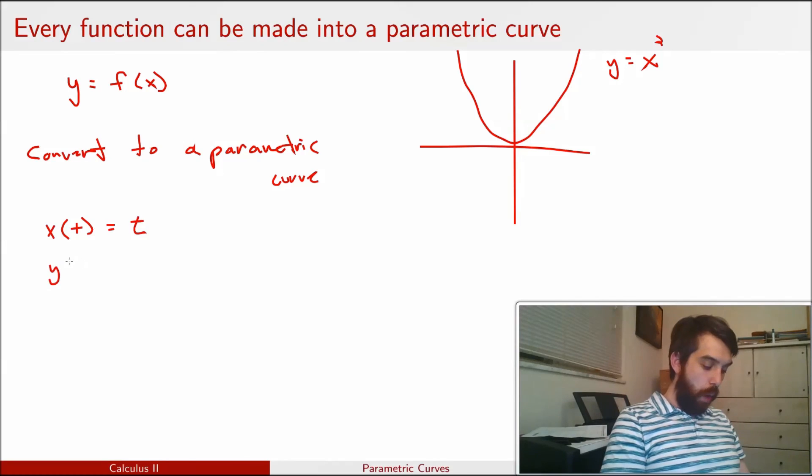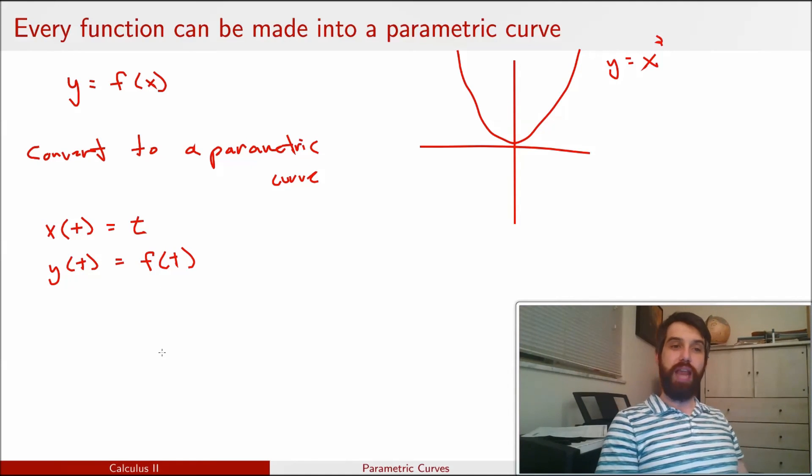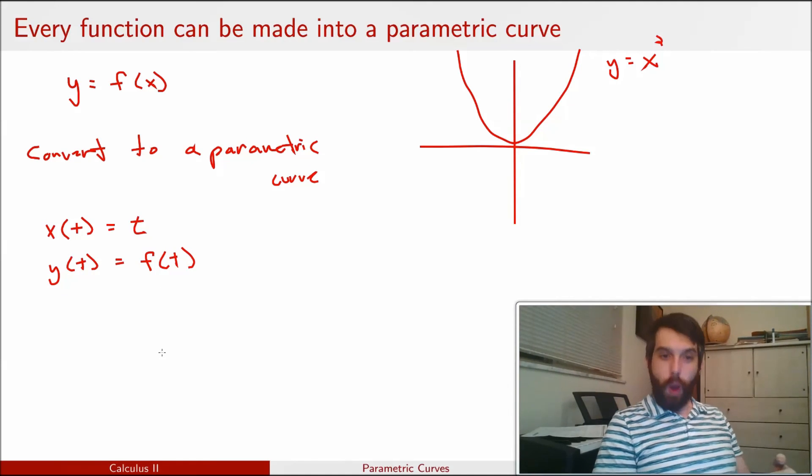And then the y variable as a function of t is going to be given as whatever the function f of t was. So in other words, now I have an x of t and a y of t, so they are both written in terms of the parameter t.